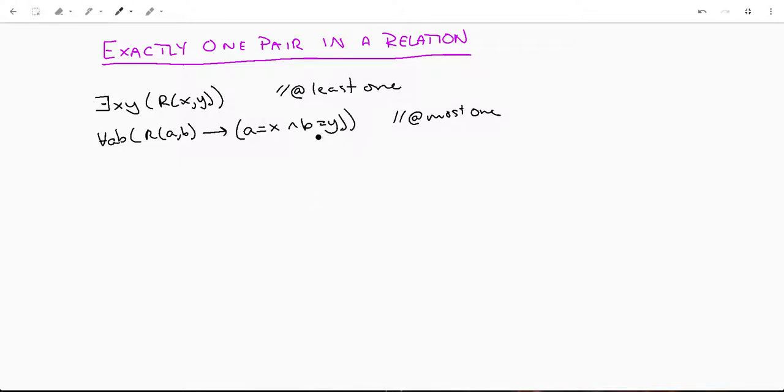I'm going to put that all together and then we're going to go over it again. So this whole thing is going to look like this: There exists an x, y such that x is related to y, and for all a and b - any other two variables - such that those variables are related, that implies your first variable is equal to x, your second variable is equal to y.